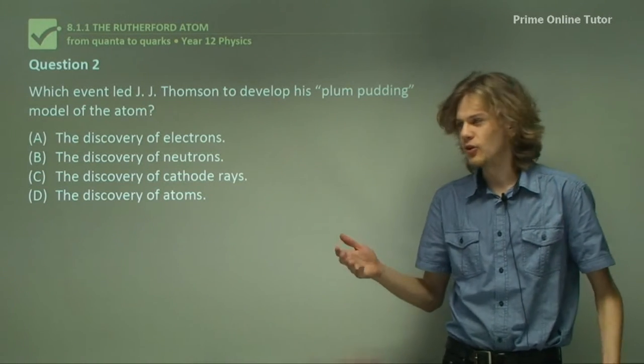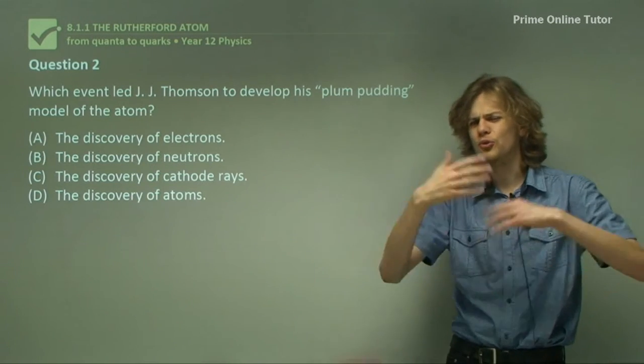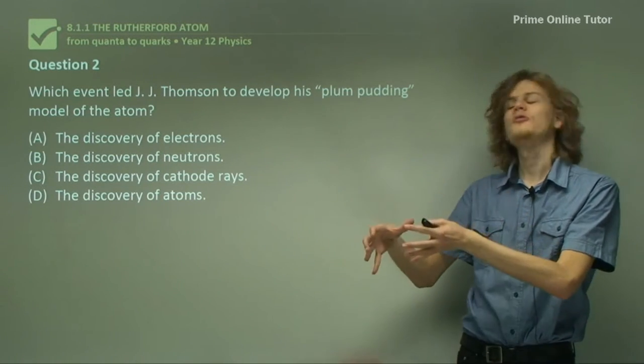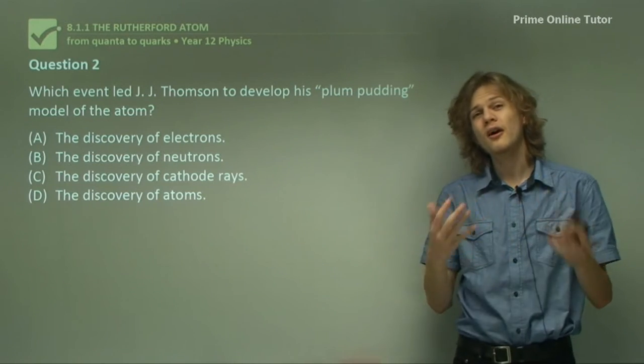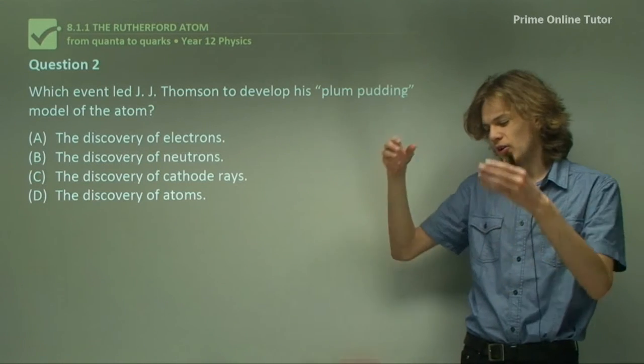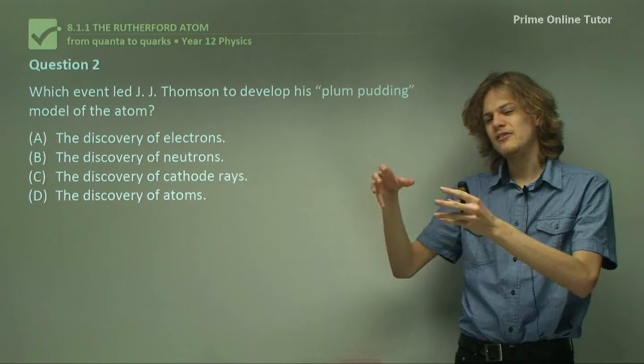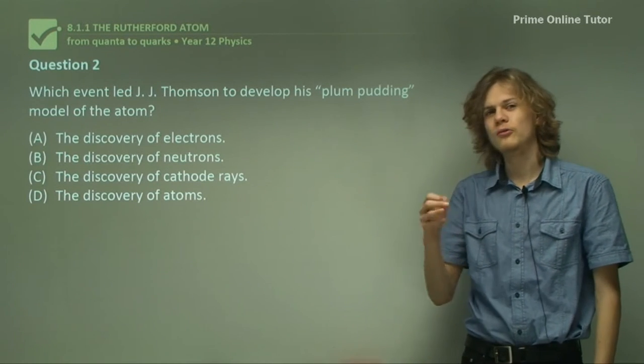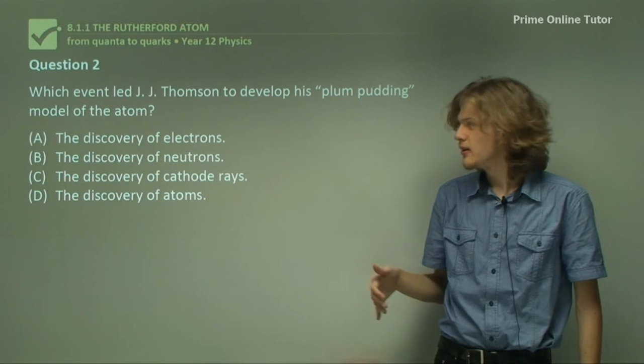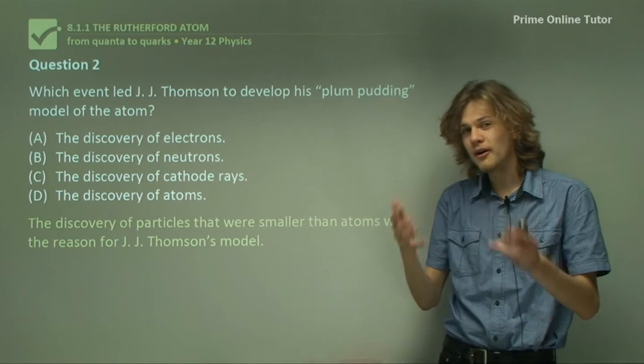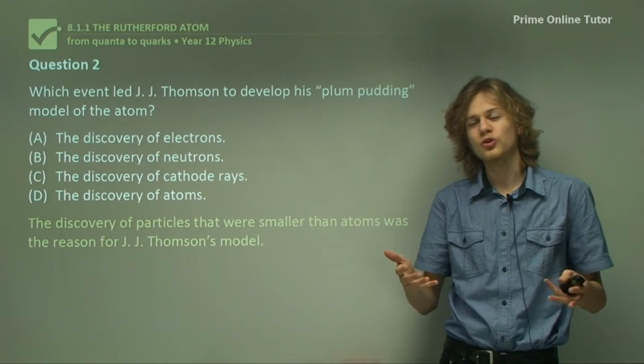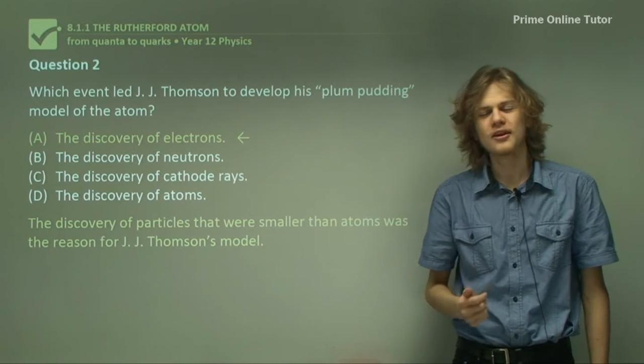The experiment produced cathode rays, so it can't be the discovery of cathode rays because those are already known when J.J. Thompson was doing his experiment. Cathode rays came out of metal and they were known to be particles and not electromagnetic radiation. That's the big discovery that Thompson made. So if there are particles coming out of the atom, it means that the atom is not indivisible. And so that would require you to make a new model. And so of these four options - the discovery of electrons, neutrons, cathode rays, and atoms - we can see that the discovery of particles that came out of the atom, which of course were electrons, were the thing that spurred Thompson on to make his new model. So A, the discovery of electrons, is the correct answer.